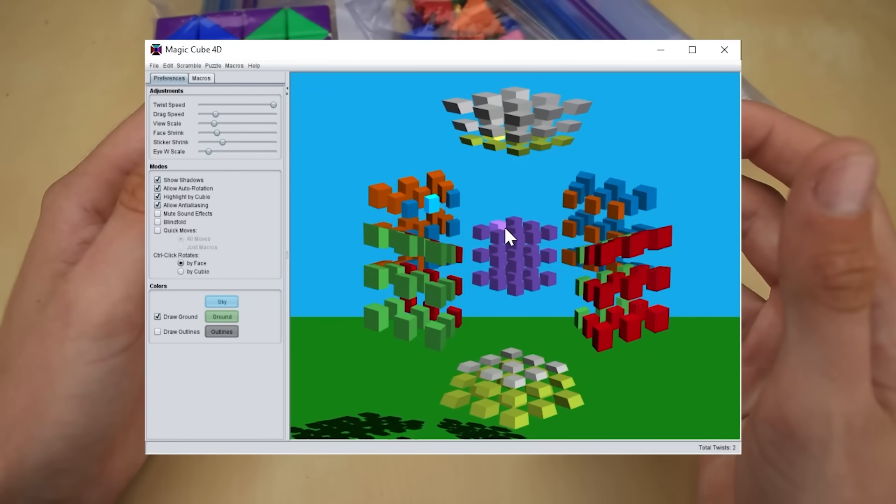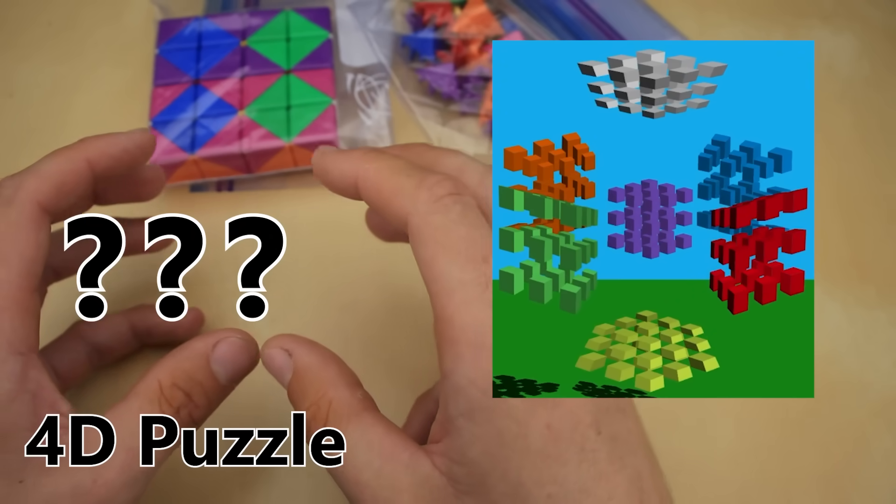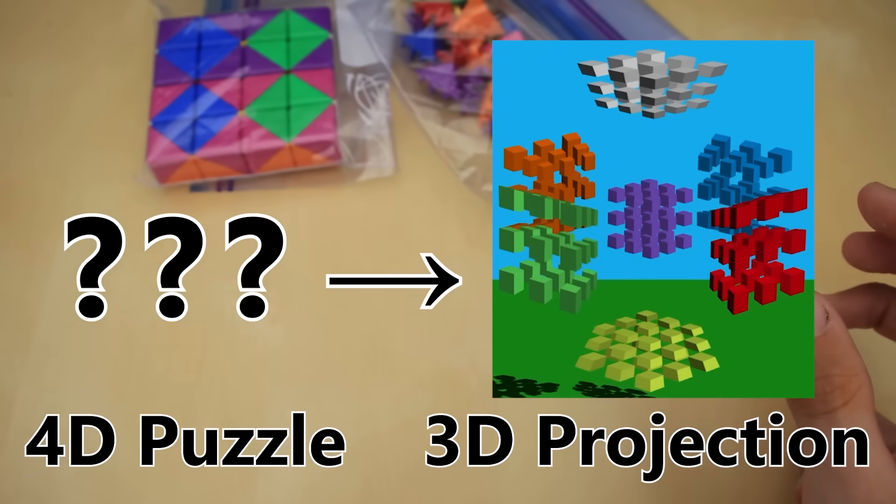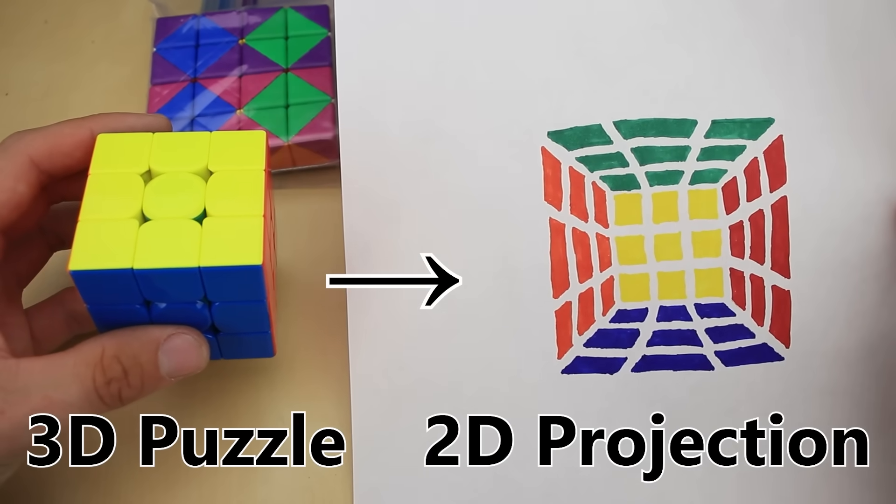This is Magic Cube 4D, which started development all the way back in 1988. Since we can't literally see in four dimensions, what you're actually looking at is that nebulous four-dimensional puzzle projected down into three dimensions to make it easier to understand, just like how you could take a three-dimensional cube and project that down onto a two-dimensional piece of paper.